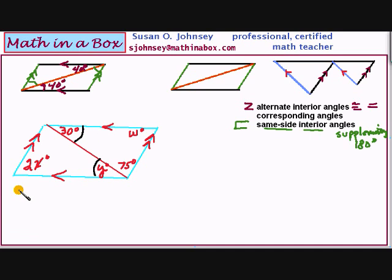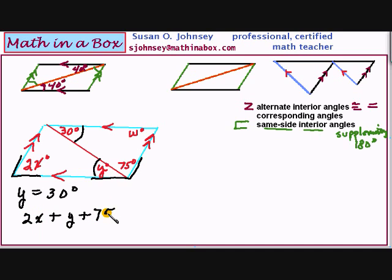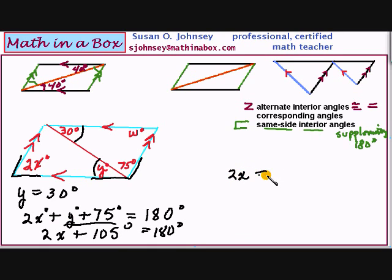Do you see anything else? Same side interior angles. That means 2x plus y plus 75 — remember, that is all one angle — equals 180 degrees. Now, because there are two variables here, I really can't solve this unless I know one of the variables. Well, Y is 30 degrees, so we'll replace that. So 2x plus 105 degrees equals 180. And that is 37.5 degrees. We have found X and we found Y.